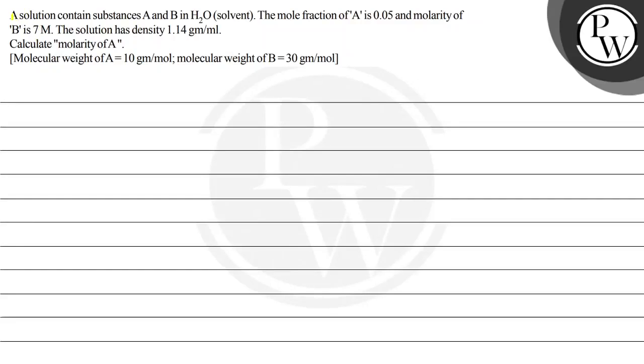Hello, let's see this question. A solution contains substance A and B in H2O solvent. The mole fraction of A is 0.05 and molarity of B is 7 molar. The solution has density 1.14 gram per ml. Calculate molarity of A.